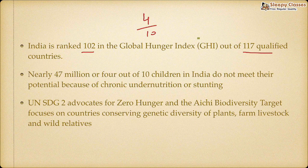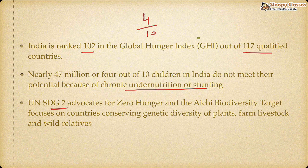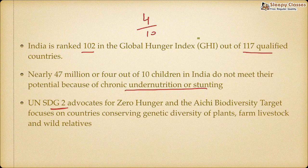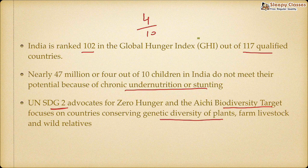4 out of 10 children in India do not meet their potential because of chronic undernutrition or stunting. It is not SDG 3 but SDG 2 that is related to zero hunger — SDG 1 is about poverty, SDG 2 is about hunger. Please write SDG 3 in the comments. Also, biodiversity targets focus on genetic diversity of plants, farm livestock, and wild relatives. So SDG 2 is related to zero hunger. That is all for the day.